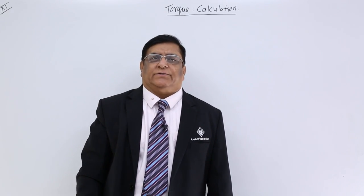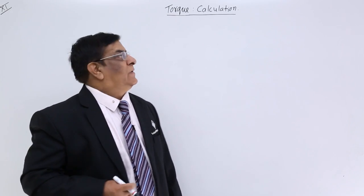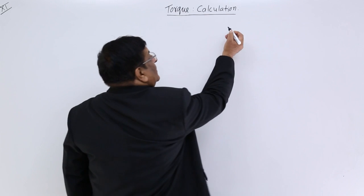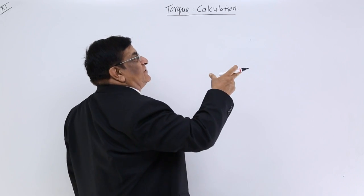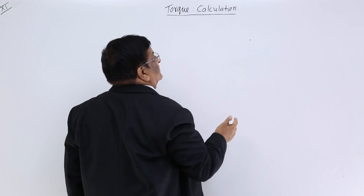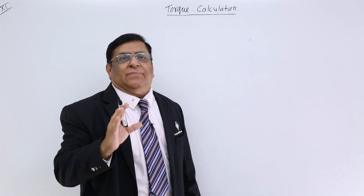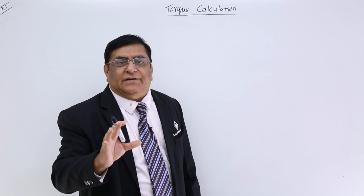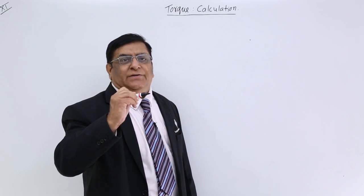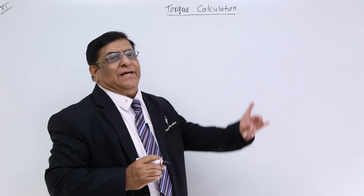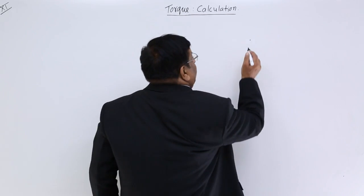For calculating torque we need two things. Number one, where is the point of rotation about which an object will move. In general cases it is the center of mass, but it may not be the center of mass. We may rotate anything at any other point, taking it as a center. The axis may be anywhere. We apply force on a body.